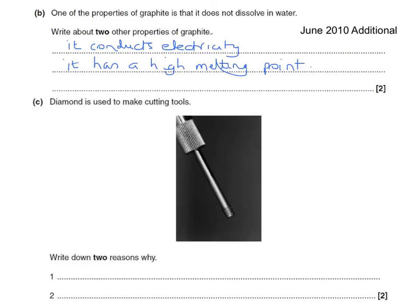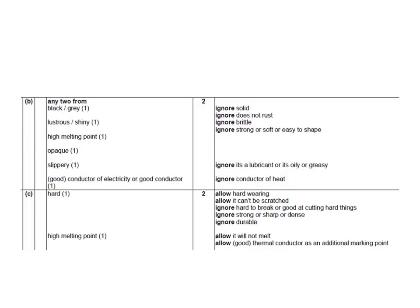Diamond is used in making cutting tools — write down two reasons why. It has a high melting point, and it is hard. These are the answers which are accepted. Just be very careful to learn those properties word for word and not to use other words which might sound the same to you, but are actually unacceptable on the mark scheme.